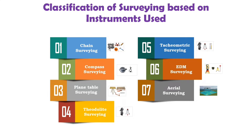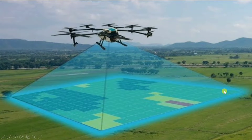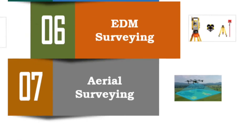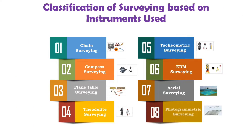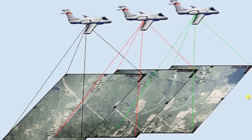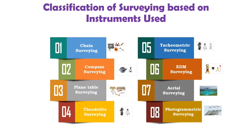The next is aerial surveying. In aerial surveying, the measurement of area is taken using new technology from the air. The next is photogrammetric survey. Photogrammetric survey is the science of taking measurements with the help of photographs taken by an aerial camera from an aircraft. This completes the classification of surveying based on the equipment used.